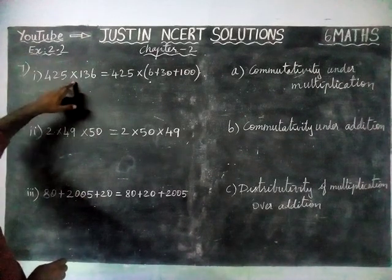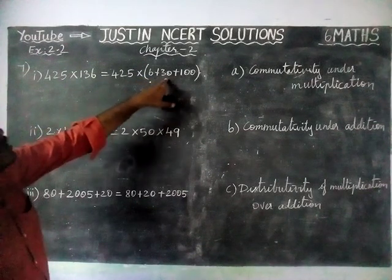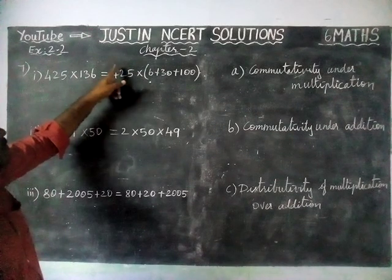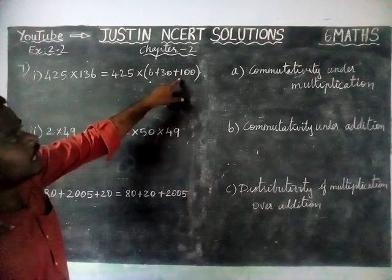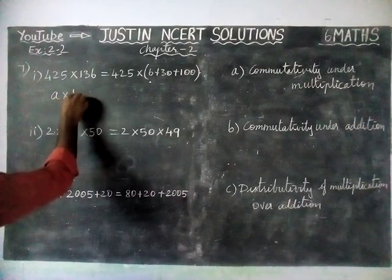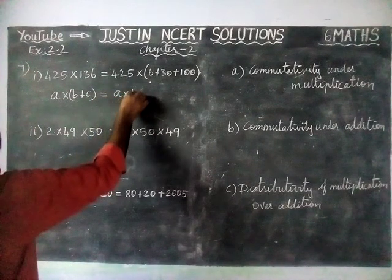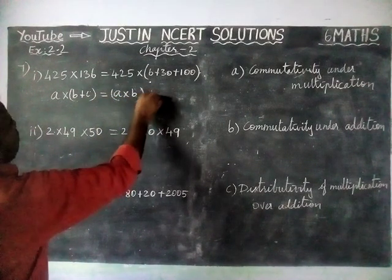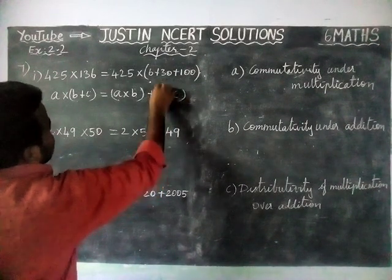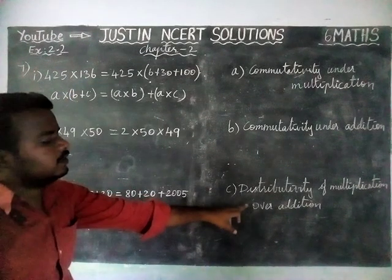This is 425 into 136. Here 136 is separated like 6 plus 30 plus 100. We have to multiply 425 into 6, plus 425 into 30, plus 425 into 100. So this is in the method of A into (B plus C) is equal to A into B plus A into C. This is distributivity of multiplication over addition.